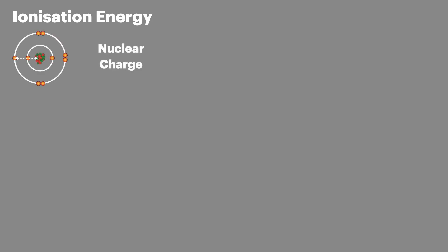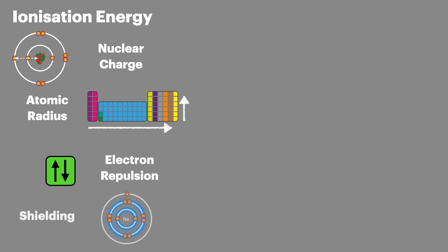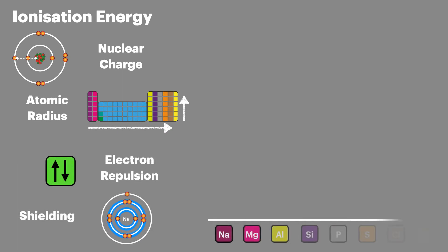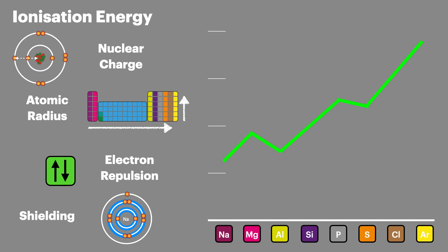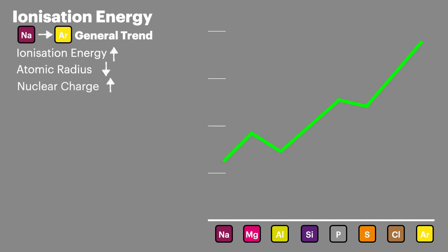Ionization energy is a bit more complicated. I've already had an in-depth look at ionization energy and you can find the link to that on the video at the top of the screen or in the description below. There are four things that affect ionization energy: nuclear charge, atomic radius, electron repulsion and electron shielding. We can see from the trends that the ionization energies across period 3 are plotted here. The general trend from sodium through to argon shows an increase in ionization energy, because the atomic radius decreases and the nuclear charge increases.